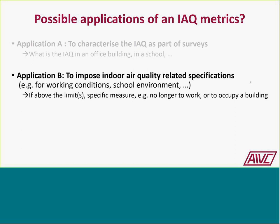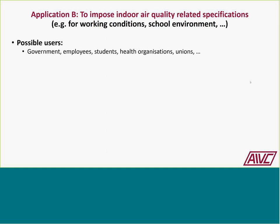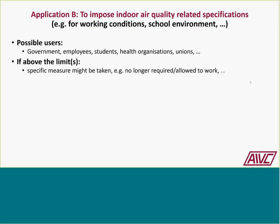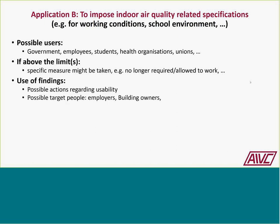Application B is imposing IAQ-related specifications through a metric—for example, in the context of working conditions or school environments—whereby if you are above one or more limits, you might consider specific measures, such as no longer working in that space or not occupying the building. Possible interested parties include government, employees, students, health organizations, and unions. Exceeding limits may lead to remedial measures or liability issues for employers or building owners.